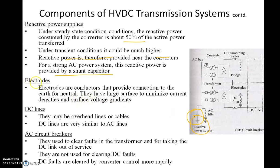Electrodes are conductors that provide a connection to earth for the neutral. The two transformers on each side have their neutrals earthed through electrodes, which have a large surface area to minimize current density and surface voltage gradient. DC lines can be overhead lines or underground cables, and they are very similar to AC lines.